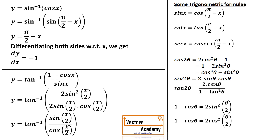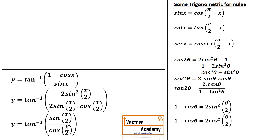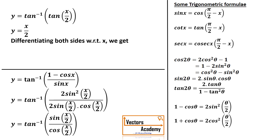We are left with tan inverse of sin(x/2) upon cos(x/2). Since sine upon cosine becomes tan, we get tan inverse of tan(x/2). Tan and tan inverse cancel, leaving y equal to x/2. Differentiating both sides, I'll get 1/2, as the derivative of x is 1 and the constant term will remain.